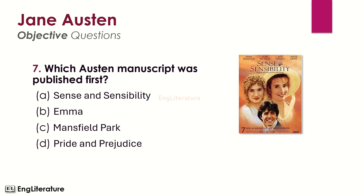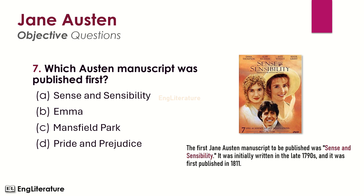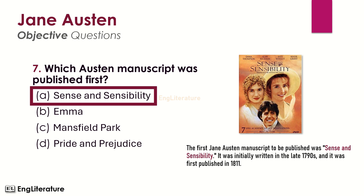Question number 7: Which Austen manuscript was published first? The first Jane Austen manuscript to be published was Sense and Sensibility. It was initially written in the late 1790s and first published in 1811. The right choice is number A — Sense and Sensibility was Austen's first published manuscript.